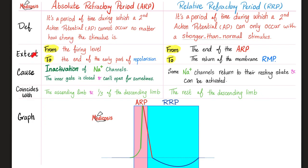Where does the absolute refractory period extend? It extends from the firing level, the beginning, to the end of the early part of repolarization. So it's the depolarization phase and the first one third of the descending limb. Why does this happen? Because inactivation of the sodium channels. When these gates close, you cannot open them instantaneously because there's something called inertia in physics. They have to wait until they're able to open again. So you have to wait.